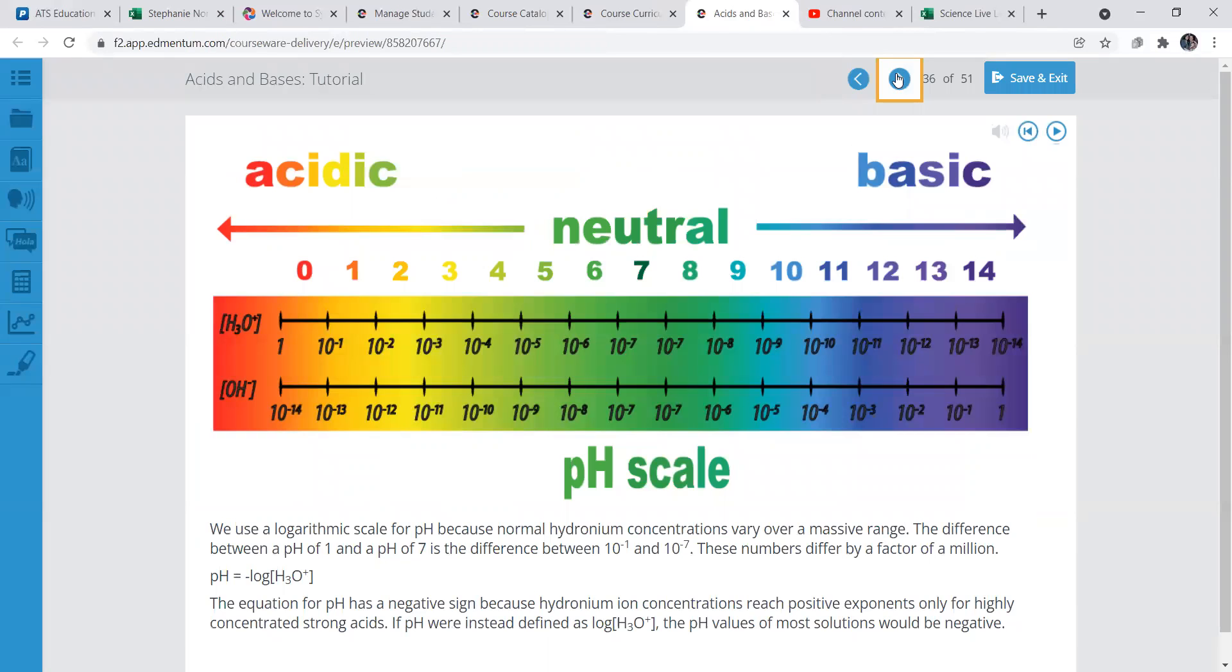All right. Here is our pH scale. Bases are anything over about seven. Acids are anything under seven. And here it just kind of gives you some different examples of what goes on. Here's the different colors on the pH scale as well.